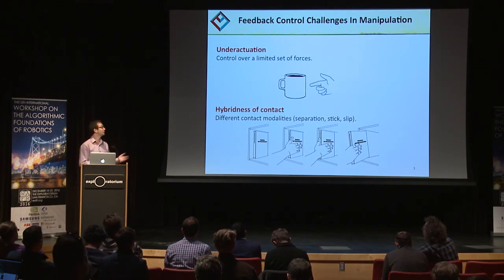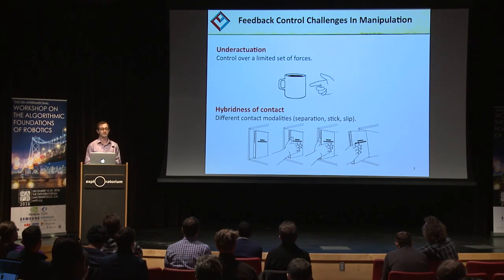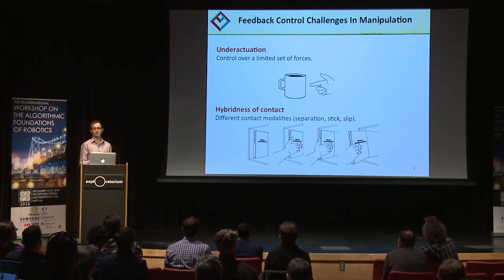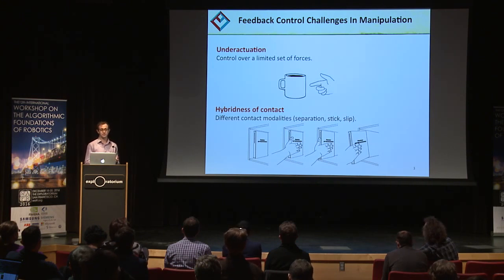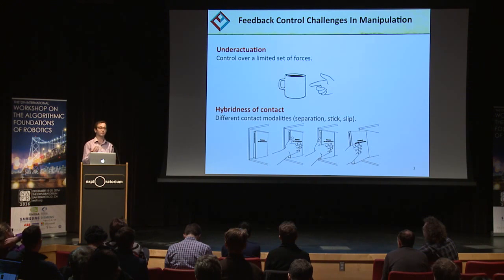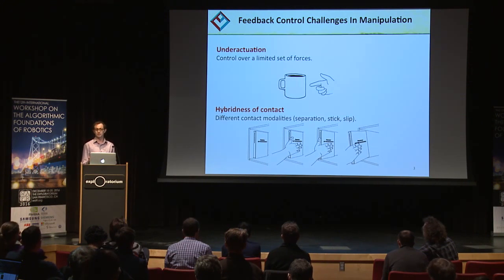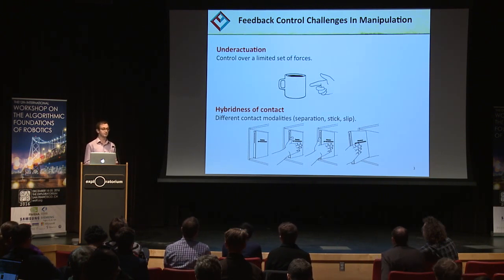We attribute this in part to two theoretical challenges of feedback through contact. The first challenge is that when you interact with an object through contact, you can only exert control over a limited set of forces. For example, pushing a coffee mug, you can only push on the mug, you can't pull. Also, the forces you can impress on the object are limited to the friction cone, and your controller needs to reason about these limitations.